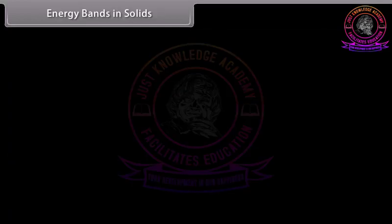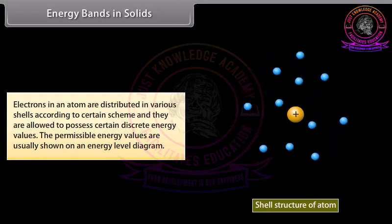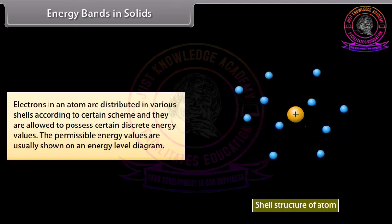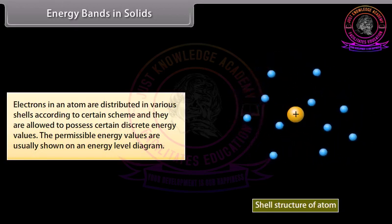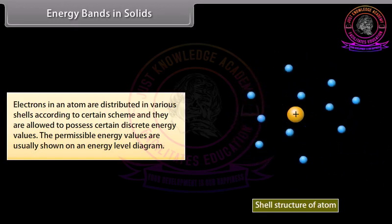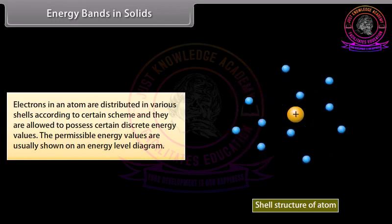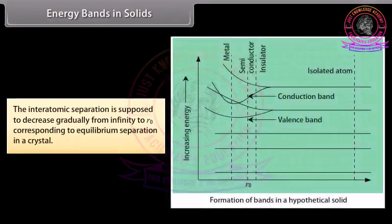Energy bands in solids. Electrons in an atom are distributed in various shells according to a certain scheme, and they are allowed to possess certain discrete energy values. The permissible energy values are usually shown on an energy level diagram. We consider the formation of bands for the energy level normally occupied by the valence electrons and the next level above it. The interatomic separation is supposed to decrease gradually from infinity to R, corresponding to equilibrium separation in a crystal.